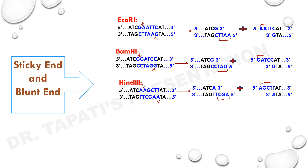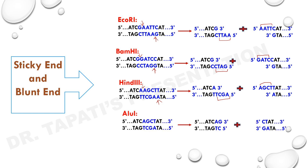Many restriction endonucleases make a simple double-stranded straight cut in the middle of the recognition sequence, producing blunt ends. In that case, there will be no unpaired DNA nucleotides on either the 5' or 3' strand — meaning there will be no overhangs.